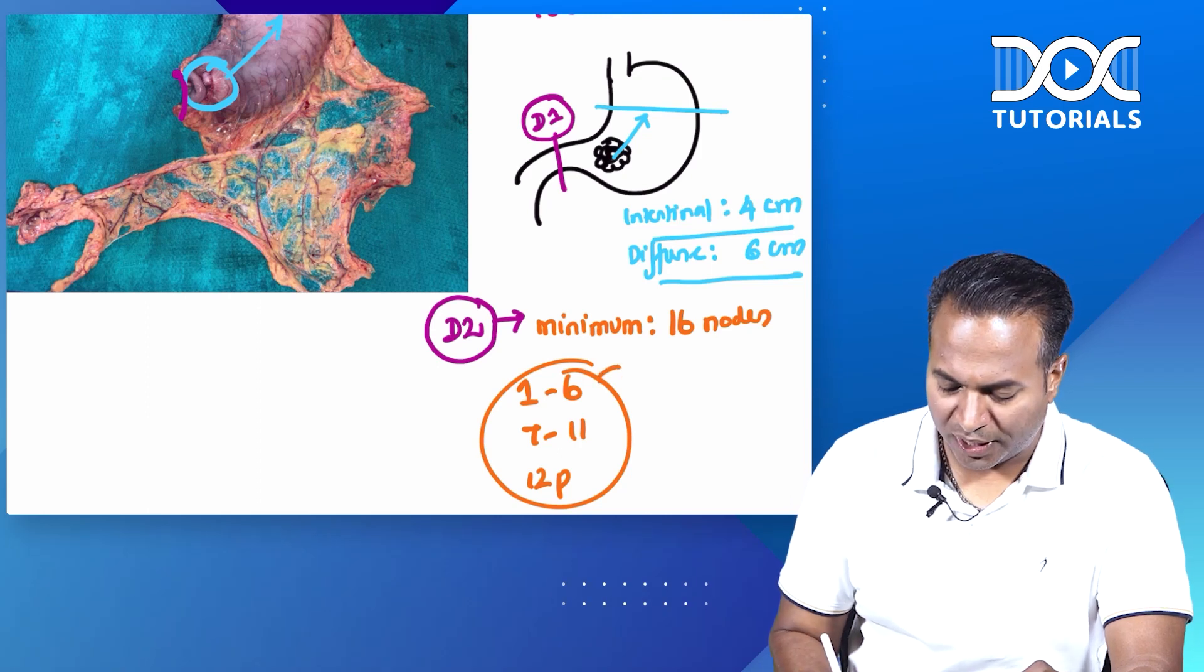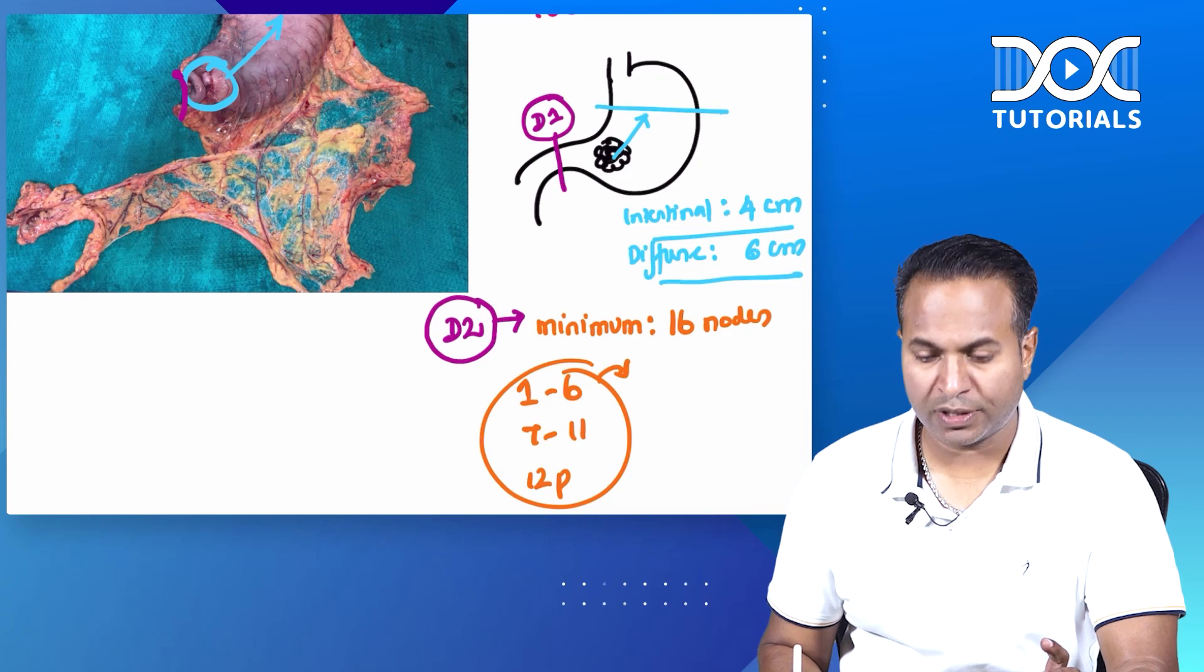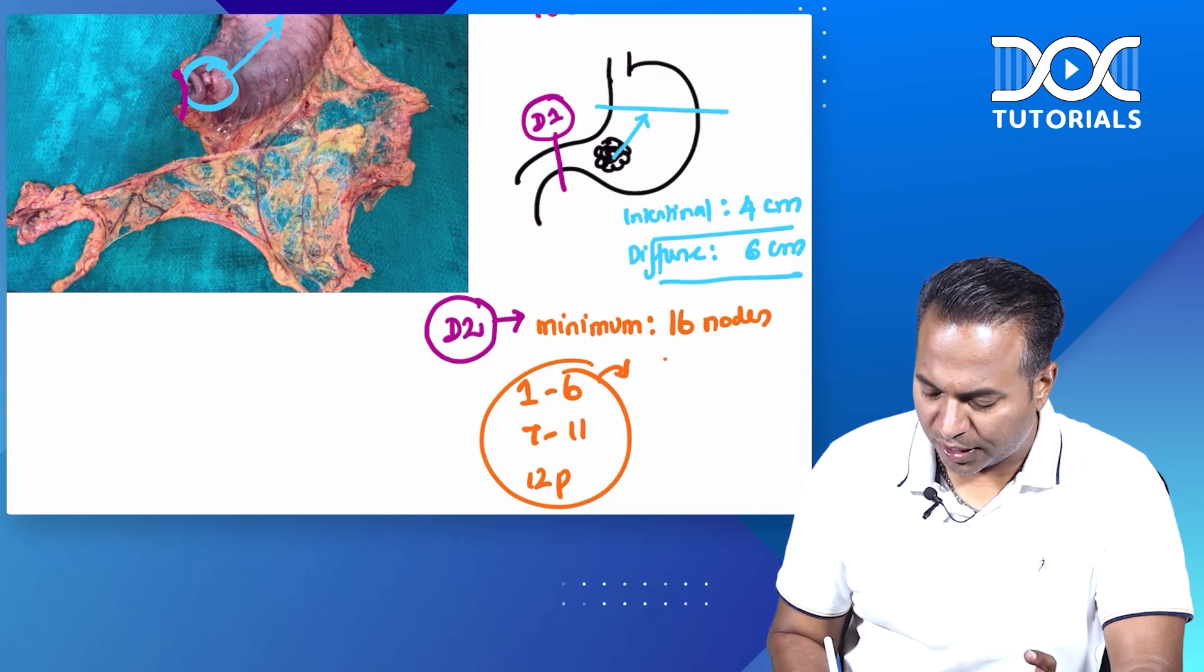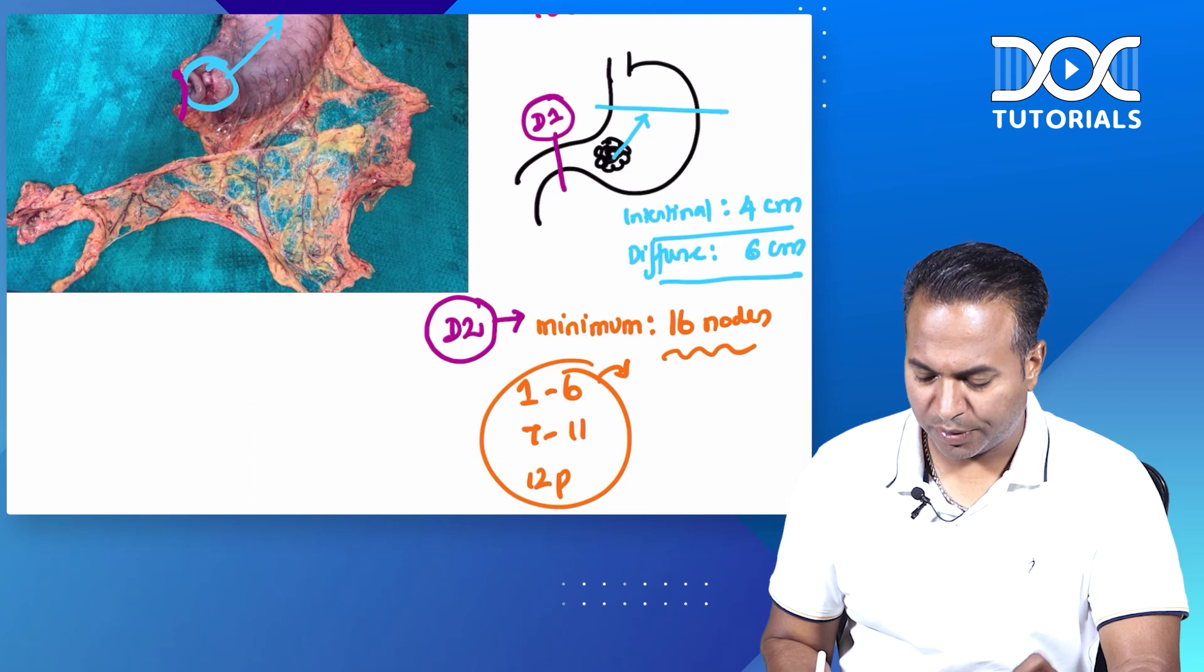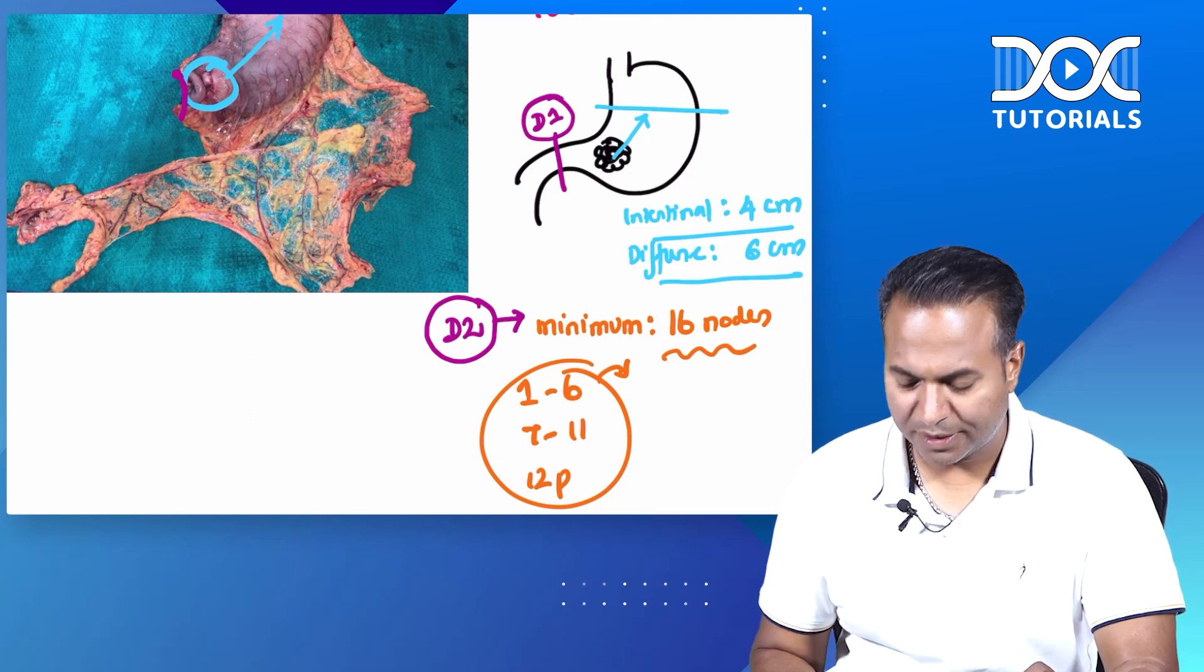So these nodes all together total 16 nodes minimum. The minimum number of nodes that should be removed in a subtotal D2 gastectomy is 16 nodes.